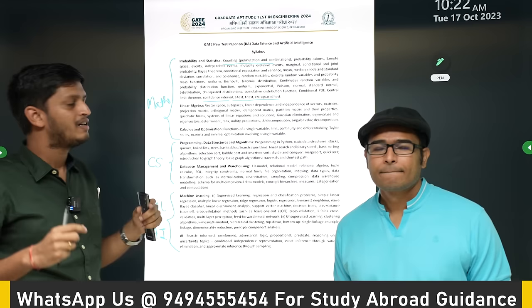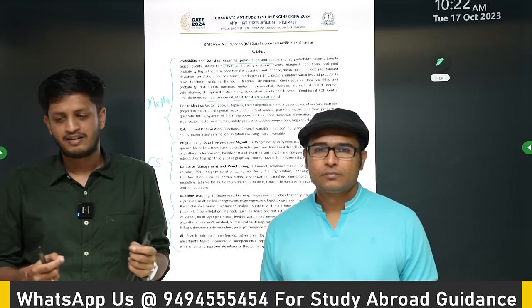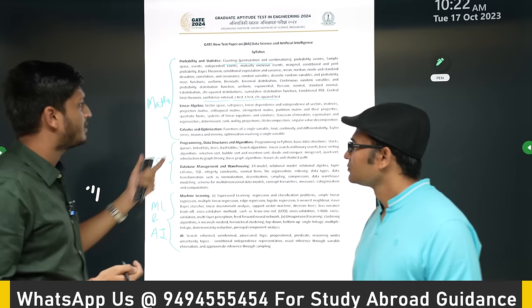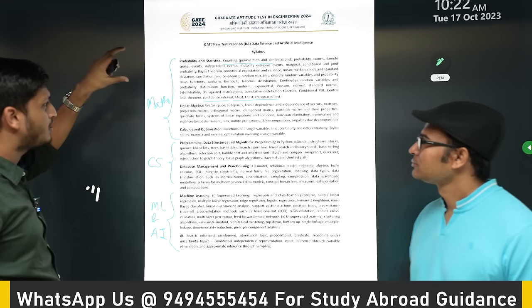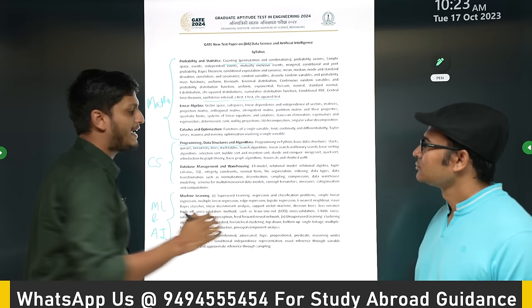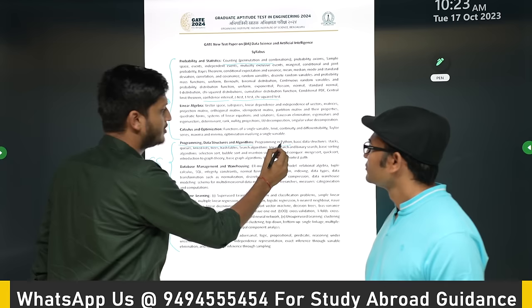Since maths is most of the part in the GATE DA syllabus, you can expect more questions from maths. In GATE Computer Science, 15 to 20 marks come from mathematics, but here you can expect around 40 marks. We will cover everything needed — probability and stats, linear algebra, calculus, programming, and data structures and algorithms — because you need to be very thorough in these basics, otherwise you will have a difficult time learning ML and AI.